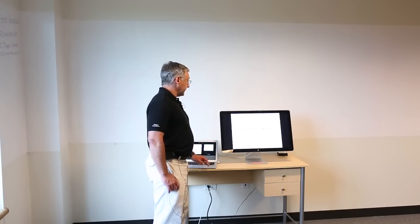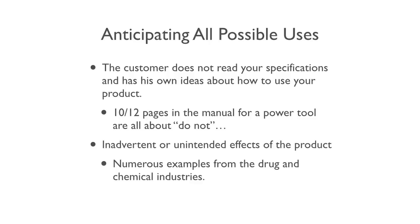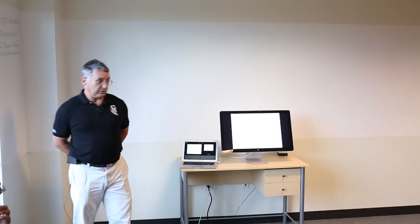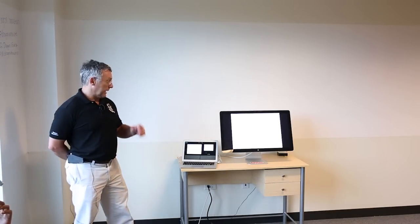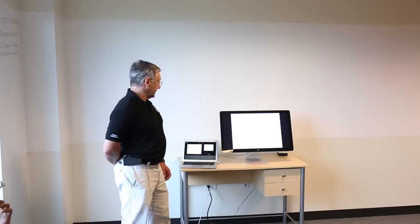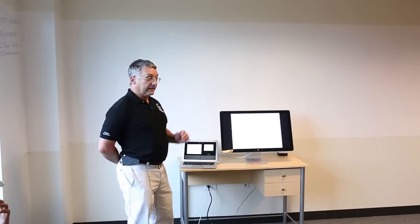How do we meet quality requirements? You've got to design it right, because it'll never be better than the design. You've got to anticipate all possible uses. I have a circular saw — of the 12 pages in the manual, 10 are 'do not use underwater, do not use hanging from a trapeze,' with absolutely no instruction on how to do a good job. You also have to think about inadvertent or unintended effects — there are countless examples from the pharmaceutical industry, like thalidomide.